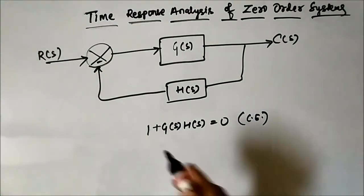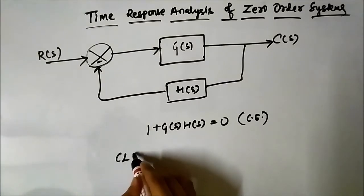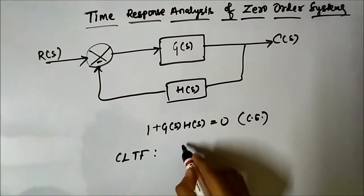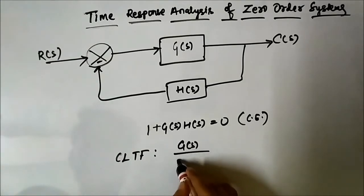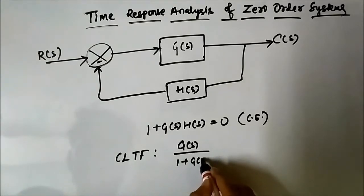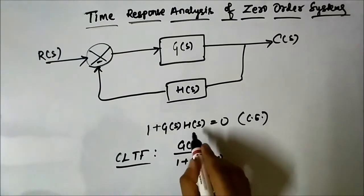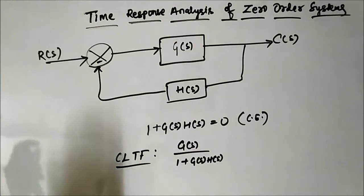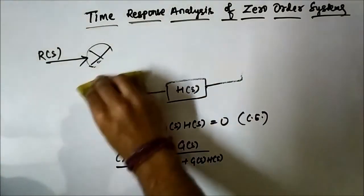The closed loop transfer function is generally given by G(s) divided by 1 plus G(s)H(s). This denominator is the characteristic equation. So let us now take a zero order system.